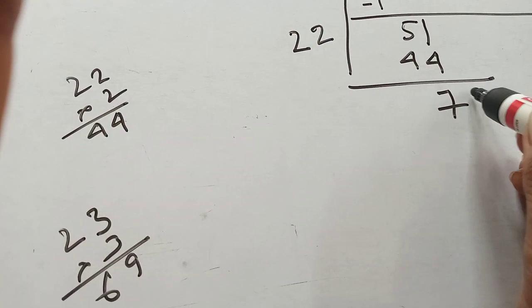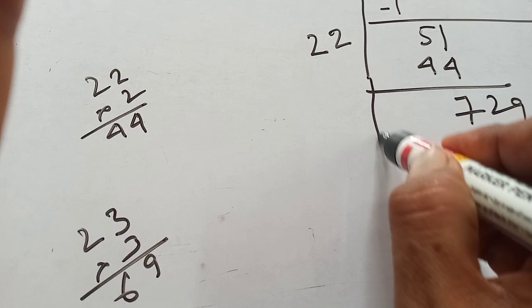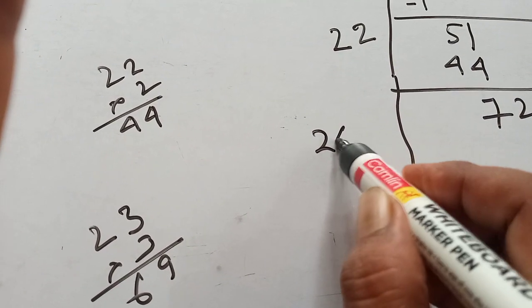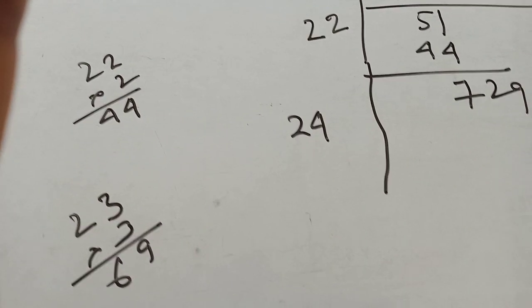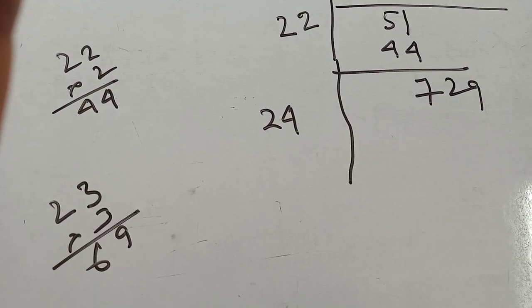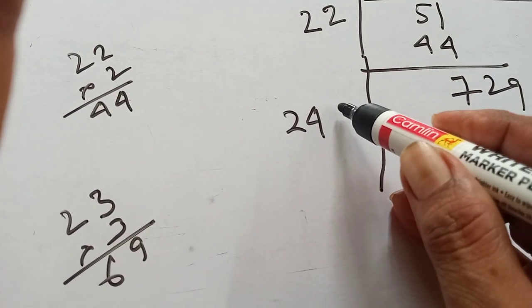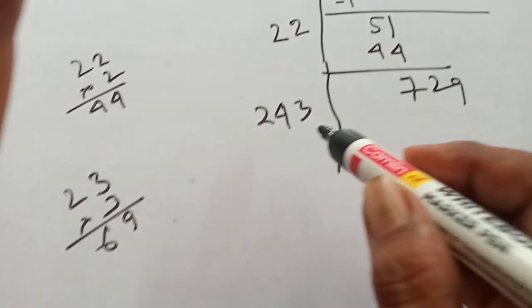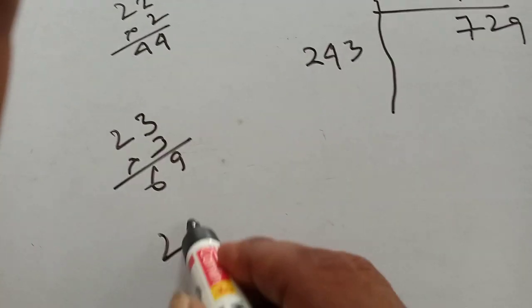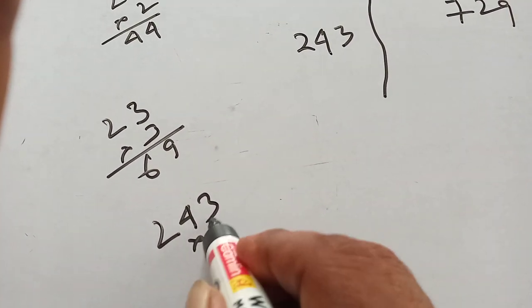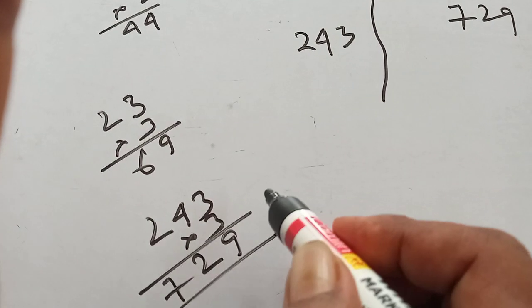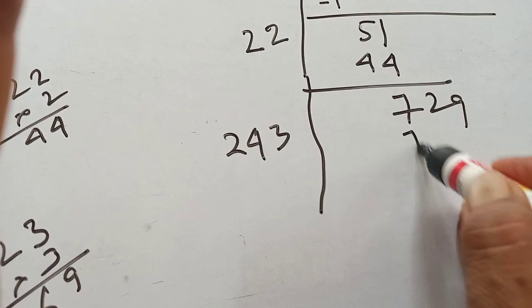Again bring down 29, and double the current quotient 12 to get 24. Now place one number beside 24 and multiply by that number. Try 3: 243 multiplied by 3 equals 729. Exactly 729 — so 3 times goes.